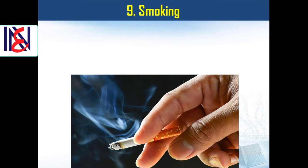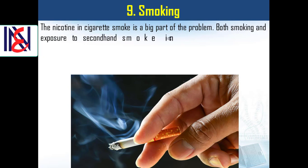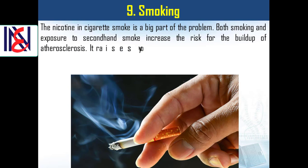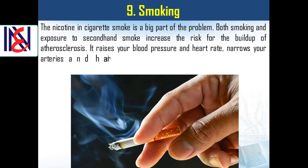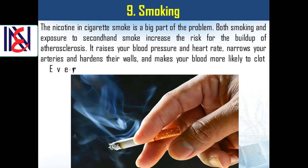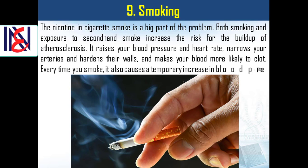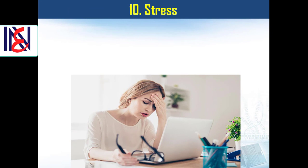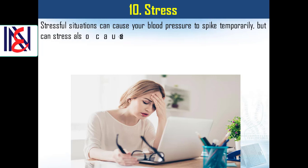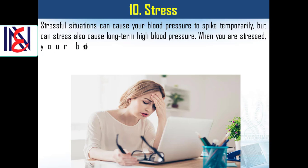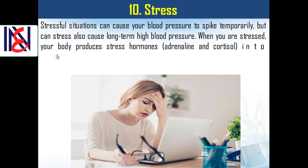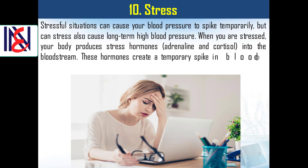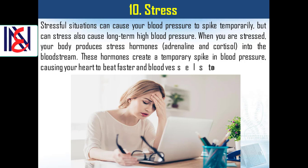Ninth, smoking. The nicotine in cigarette smoke is a big part of the problem. Both smoking and exposure to second-hand smoke increase the risk for the build-up of atherosclerosis. It raises your blood pressure and heart rate, narrows your arteries and hardens their walls, and makes your blood more likely to clot. Every time you smoke, it also causes a temporary increase in blood pressure. Tenth, stress. Stressful situations can cause your blood pressure to spike temporarily. When you are stressed, your body produces stress hormones, adrenaline and cortisol, into the bloodstream. These hormones create a temporary spike in blood pressure, causing your heart to beat faster and blood vessels to narrow.